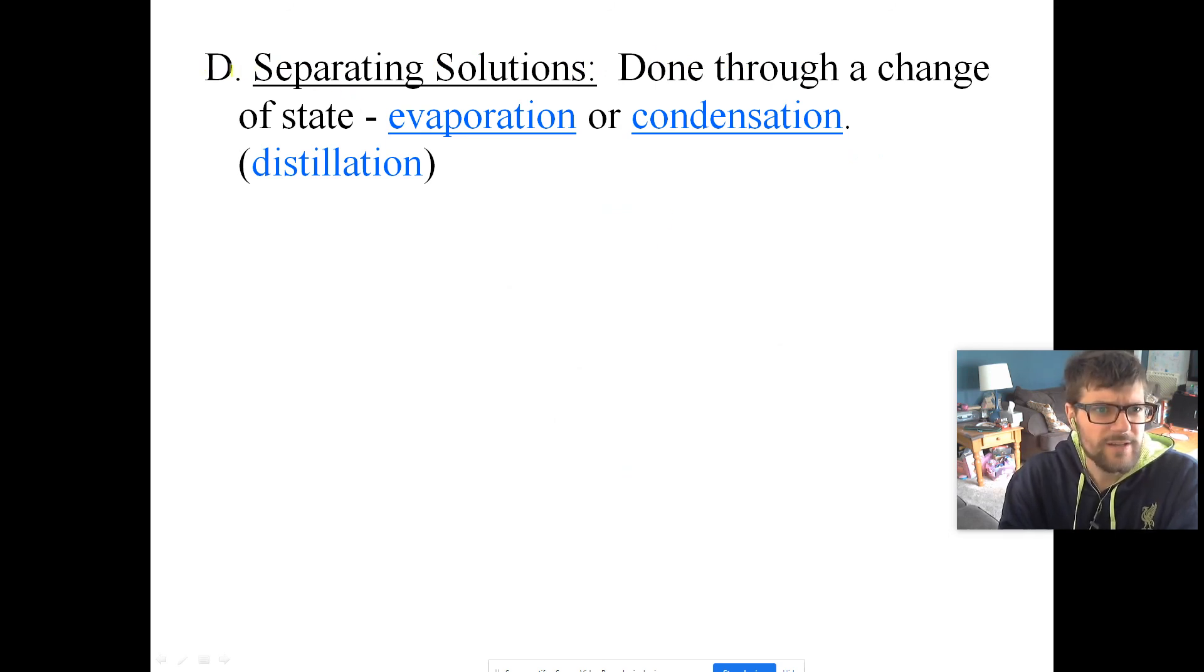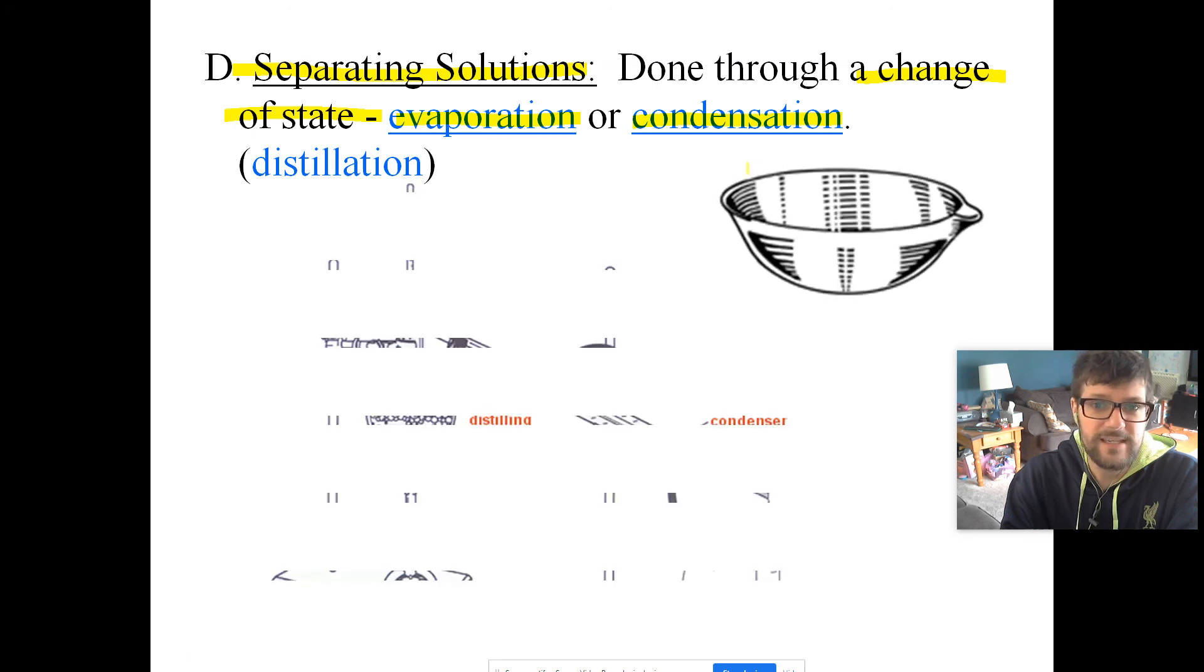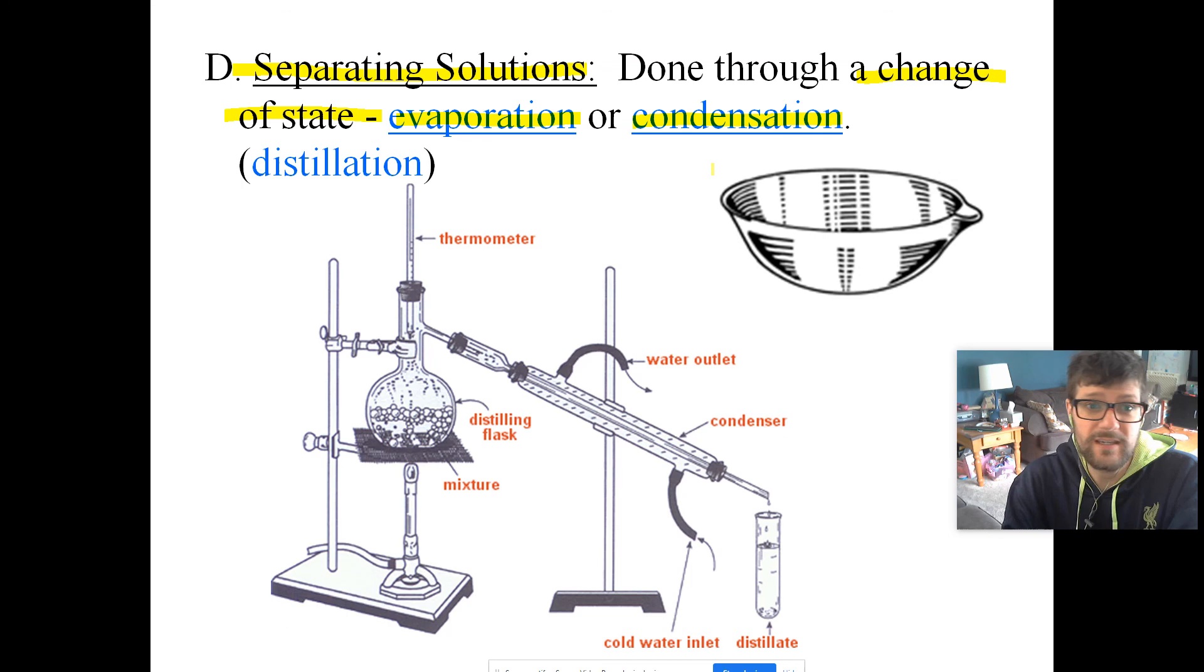Talking about separating solutions. Because a solution is two things that are physically mixed together, you can physically separate them. This does not require a chemical change. What it does require, typically, is a change of state. If you'll recall, phase changes are physical changes. The two most common are going to be evaporation or condensation, and you're going to play around with the differences in whether something can evaporate, whether something can dissolve, whether something can condense at certain temperatures and properties. If you have a solid dissolved in a liquid, you just boil off the liquid, and that's going to give you the solid back. Or if you have two liquids, you can heat the solution to the boiling point of the first liquid. It will evaporate and go into your condensing tube, and you can condense it, and that will separate that mixture.